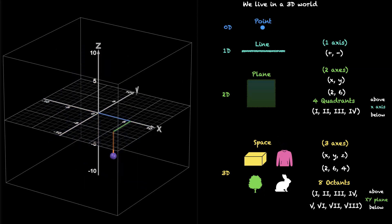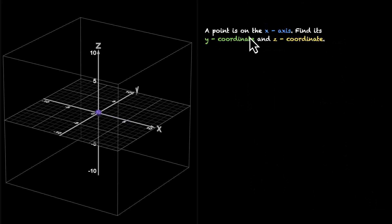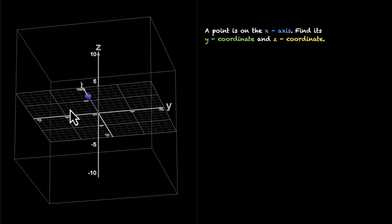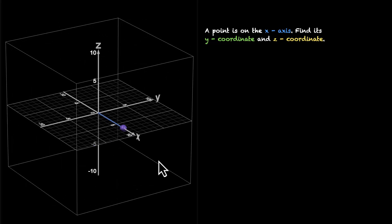Let's practice some problems. Here's the first one: a point is on the X axis — find its Y coordinate and Z coordinate. If the point is on the X axis, this means it's not moving along the Y or Z axis. So if it's on the X axis, there is no movement along the Y axis or along the Z axis. This means the coordinates will look something like (X, 0, 0) — for example (2, 0, 0), (5, 0, 0), (-3, 0, 0). These two coordinates will stay 0 because we have no movement along those two axes.